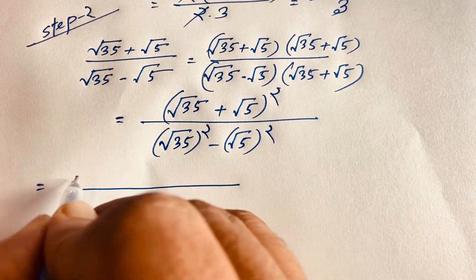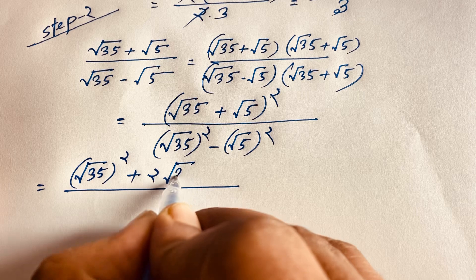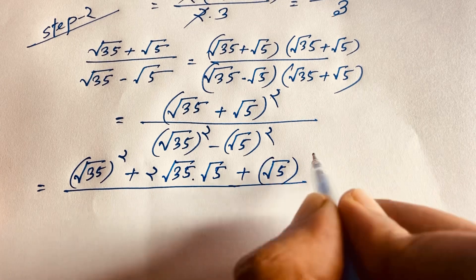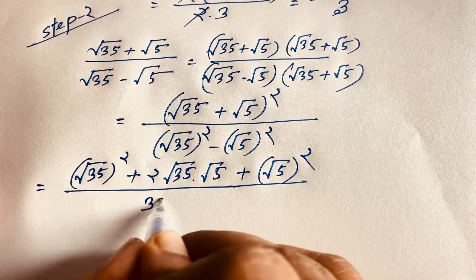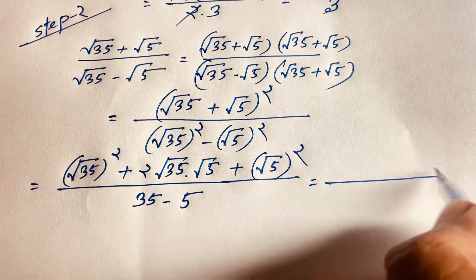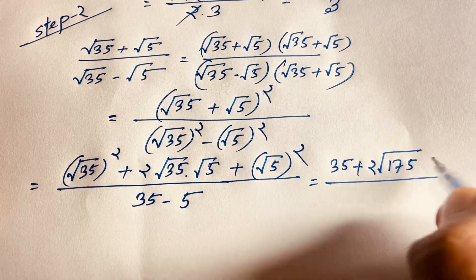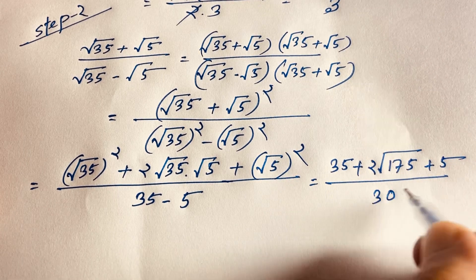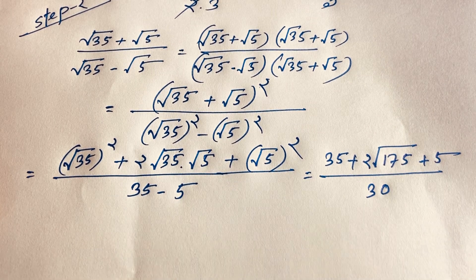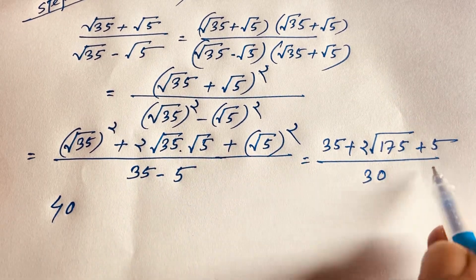The numerator expands to: square root of 35 squared, plus 2 times square root of 35 times square root of 5, plus square root of 5 squared. The square roots cancel giving 35 plus 2 times square root of 175 plus 5, over 35 minus 5, which is 30. So we have 35 plus 5 equals 40 in the numerator.